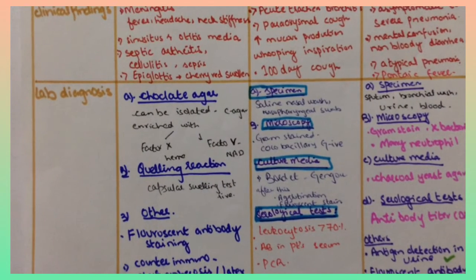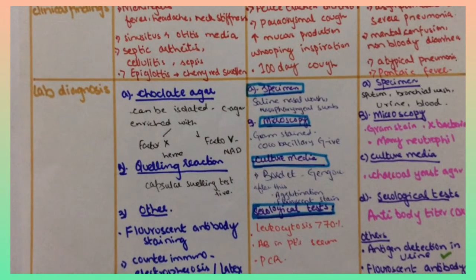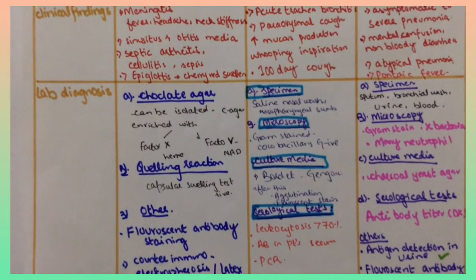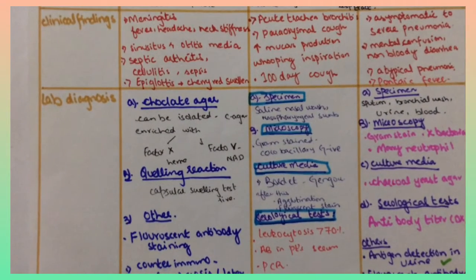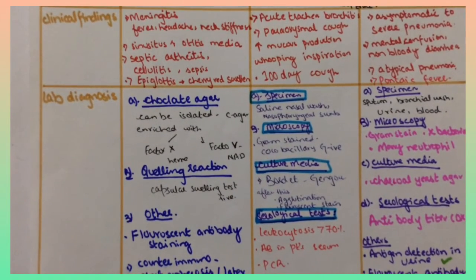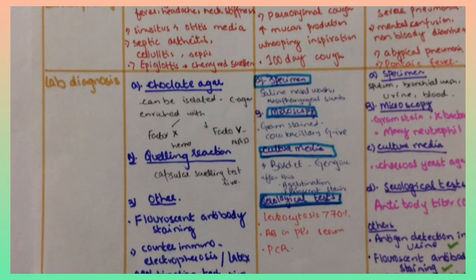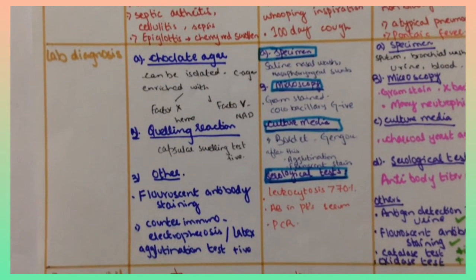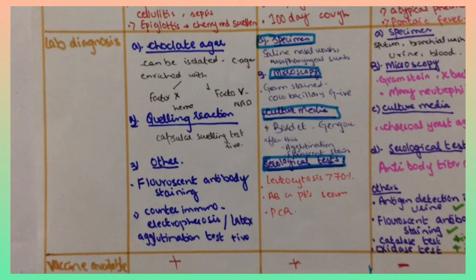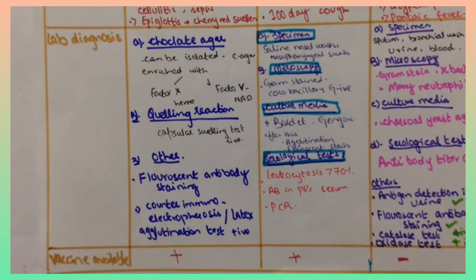For Bordetella, microscopy shows coccobacillus, gram-negative, culture media is Bordet-Gengou. Agglutination and fluorescent stain can be used. Serological test shows that leukocytosis is greater than 70%, antibodies in patient serum and PCR, vaccine is available.